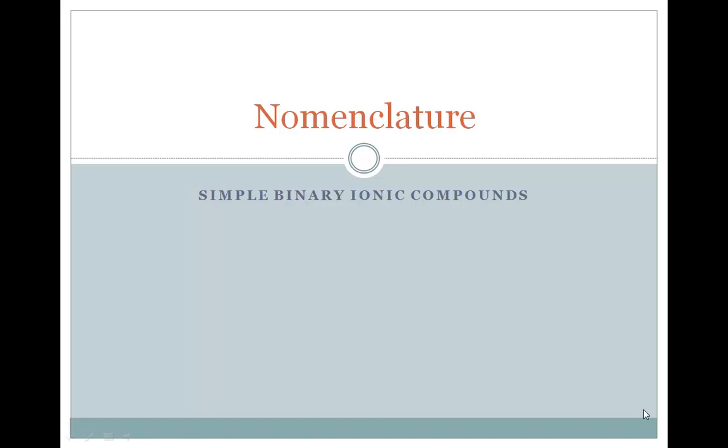The first type of nomenclature we're going to talk about is simple binary ionic compounds. Binary just means it's made of two ions.